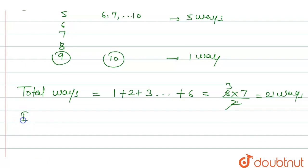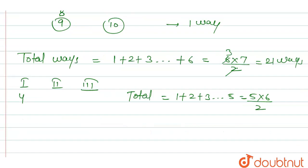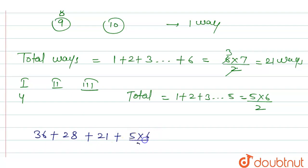Now fix 4 in the first box. The total ways equal 1 + 2 + 3 + 4 + 5, which is 5 × 6 / 2 = 15 ways. For n1 = 5, it is 4 × 5 / 2 = 10 ways. For n1 = 6, it is 3 × 4 / 2 = 6 ways.